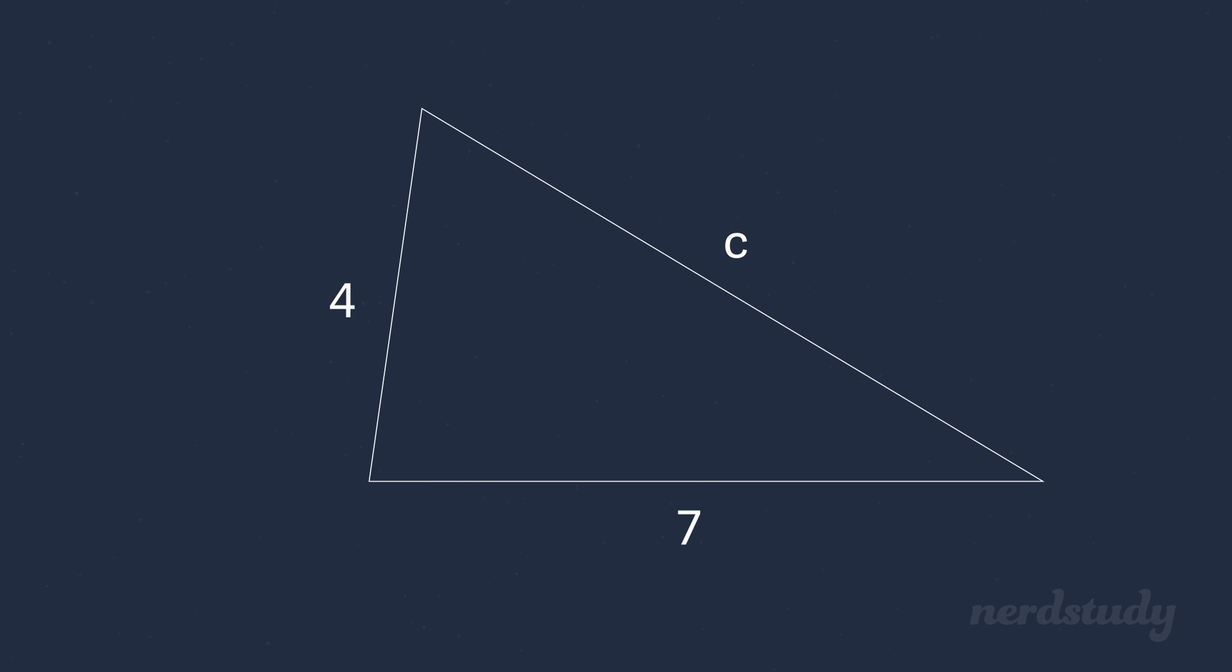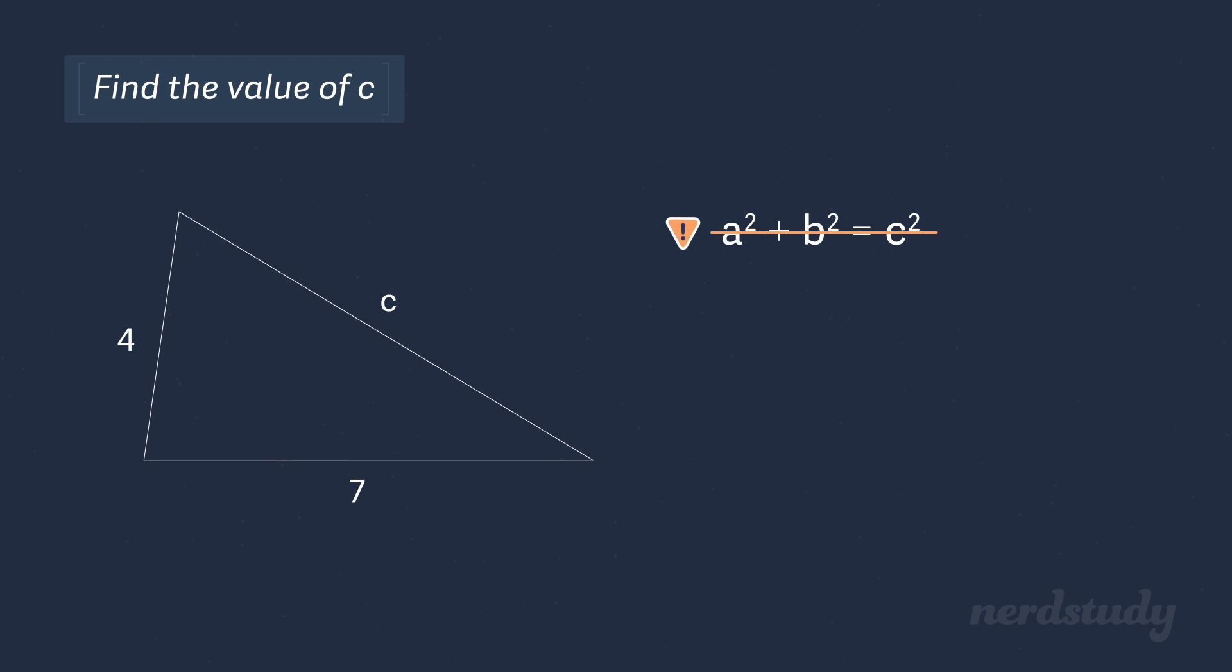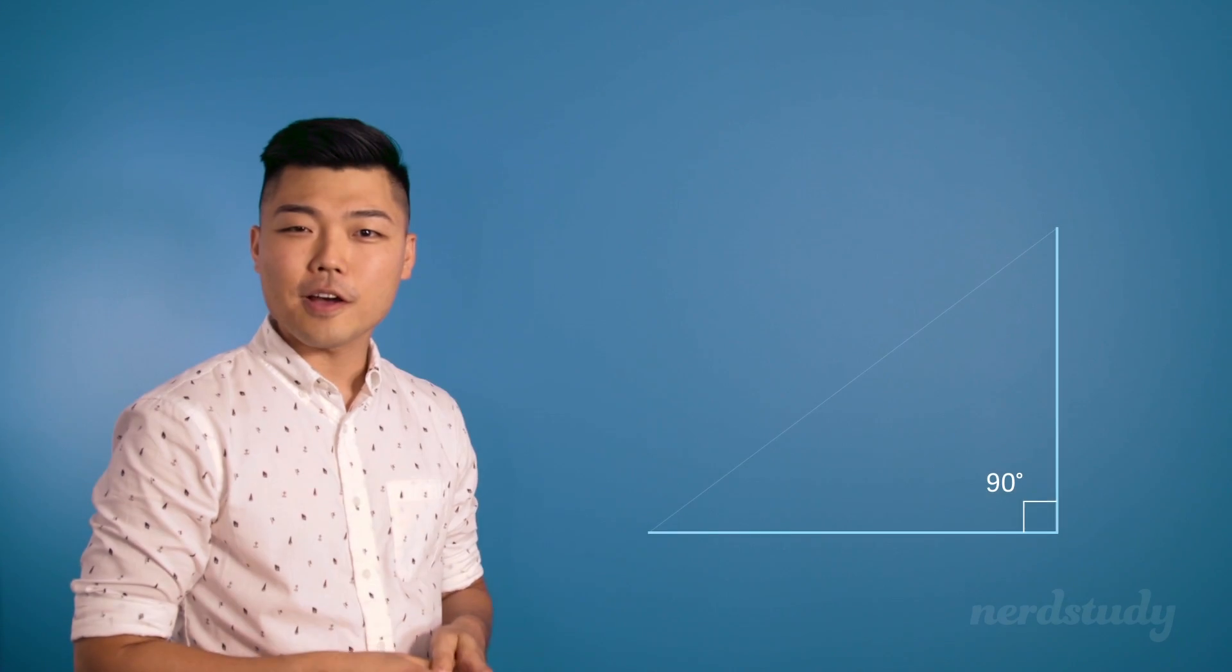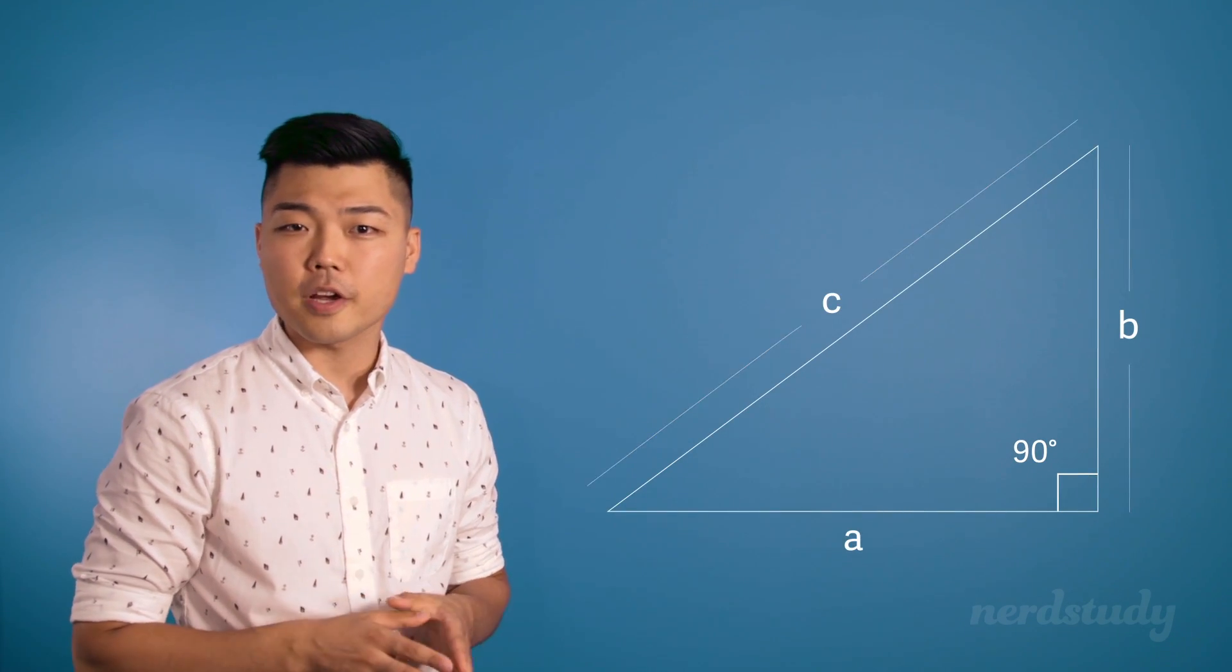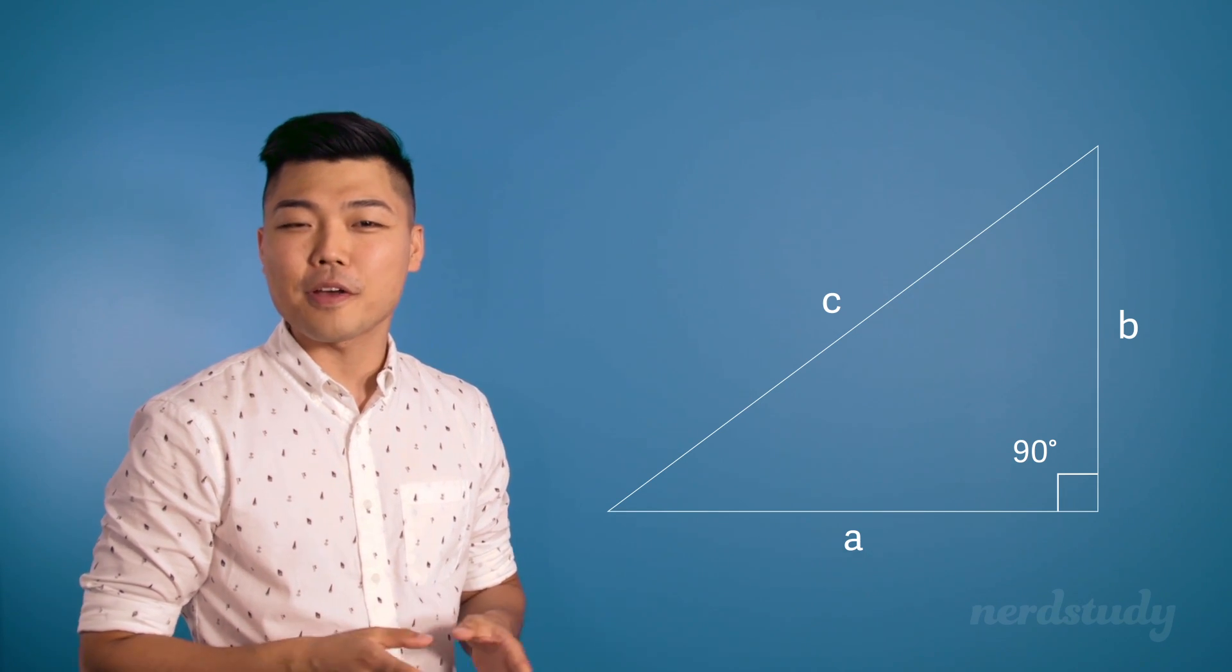This angle could, for example, be 89 degrees, and while it would be very close to a right-angled triangle, we would still not be able to use the Pythagorean theorem to find out the length of this side, since we don't know that we have a right angle in this triangle. So always look to see if the triangle is a right-angled triangle, and then look to see that you have the information on two of the side lengths of the triangle before you jump to the conclusion that you can use the Pythagorean theorem.